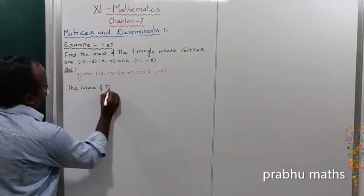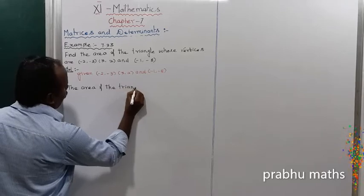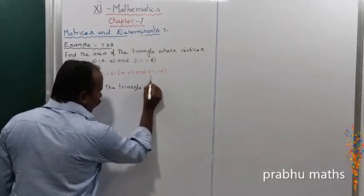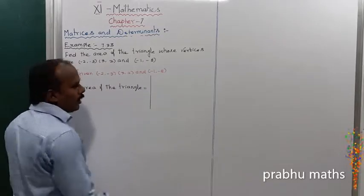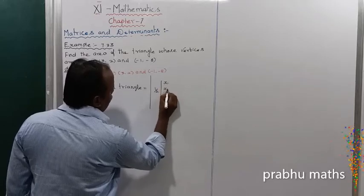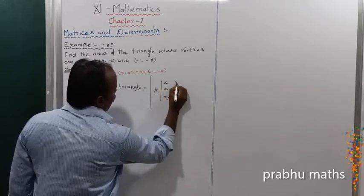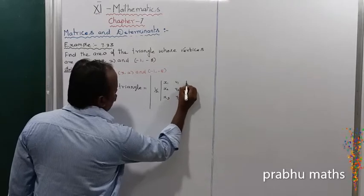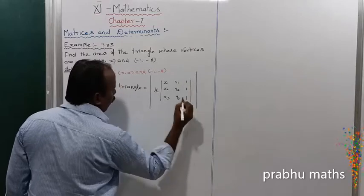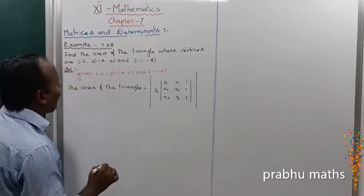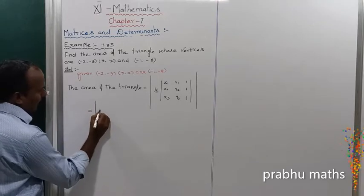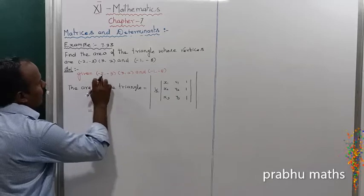The area of the triangle is equal to the absolute value of 1/2 into the determinant of X1, X2, X3, then Y1, Y2, Y3, then 1, 1, 1. That is the formula to find the area.